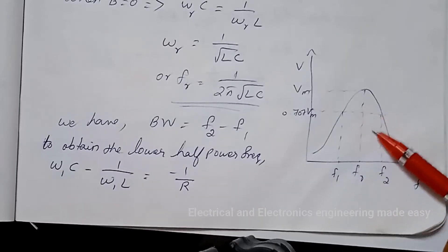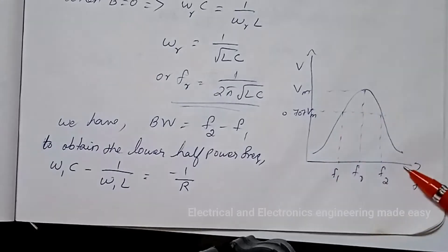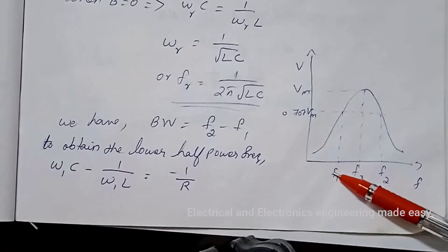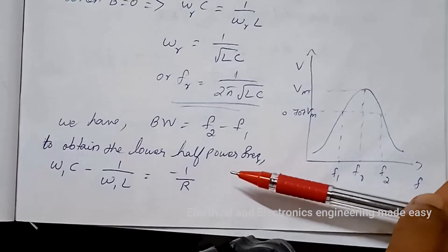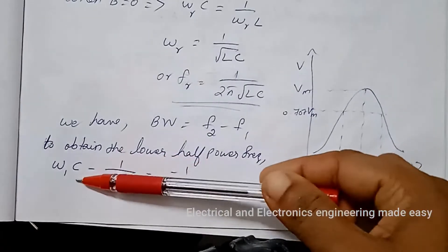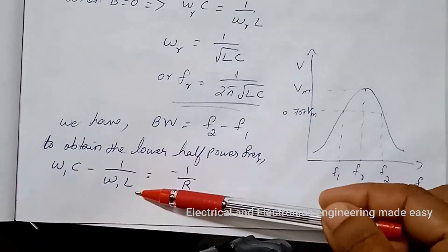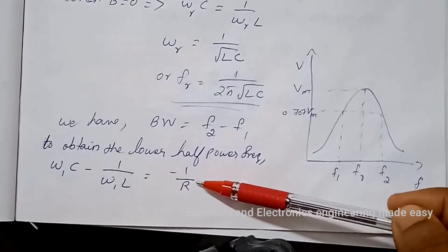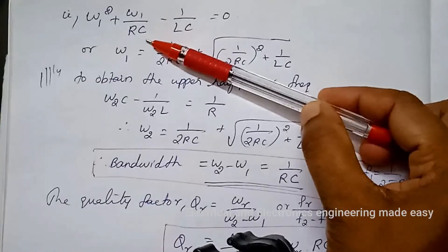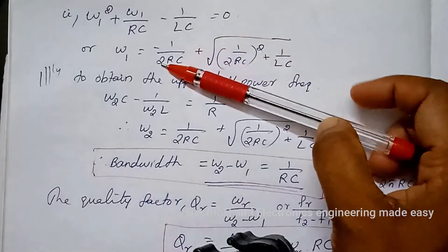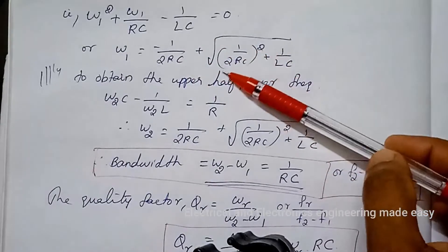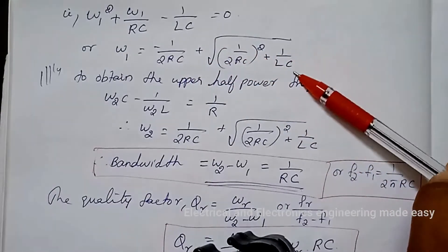The voltage variation with frequency is shown in the figure. From the figure, bandwidth equals f2 minus f1. For the parallel circuit, to obtain the lower half-power frequency, we have omega·C minus 1 by omega_1·L equals minus 1 by R. That gives omega_1 squared plus omega_1 by RC minus 1 by LC equals 0, or omega_1 equals minus 1 by 2RC plus square root of (1 by 2RC)² plus 1 by LC.